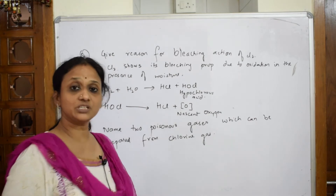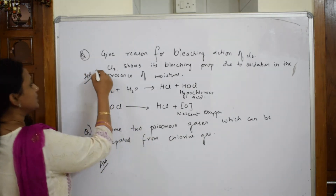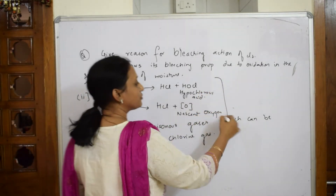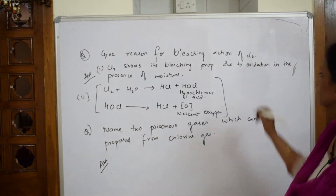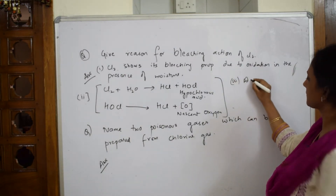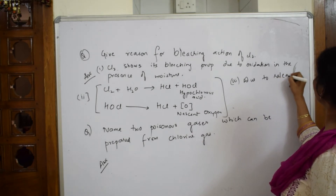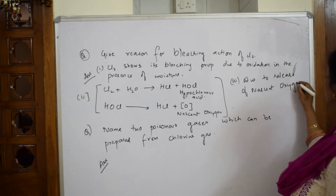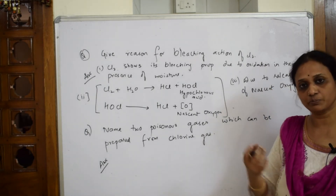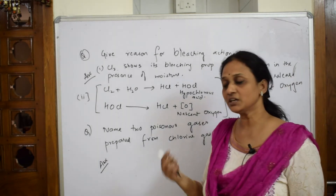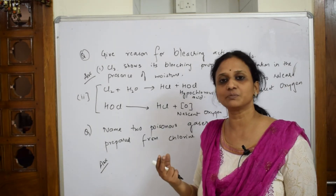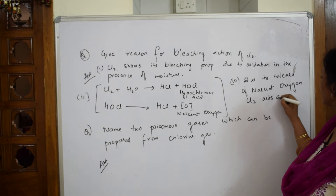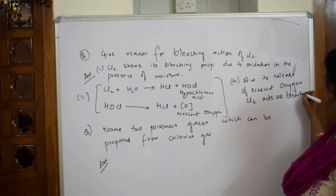The release of nascent oxygen causes chlorine to act as a bleaching agent. Structure your answer: point one — the reaction of chlorine with water; point two — the dissociation to release nascent oxygen, which enters into the pores of the cloth and destroys the chromophores of the textile. That is how chlorine acts as a bleaching agent.